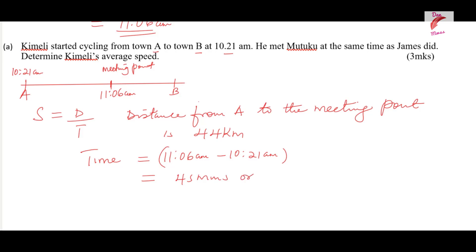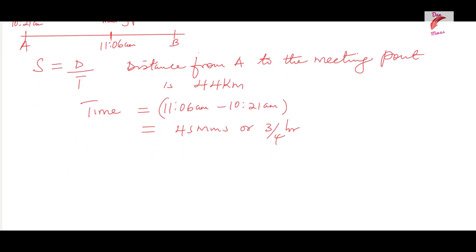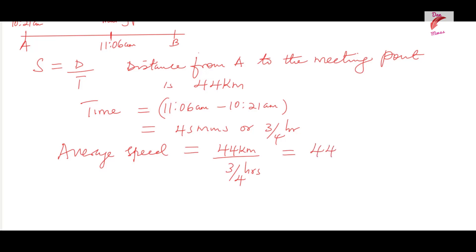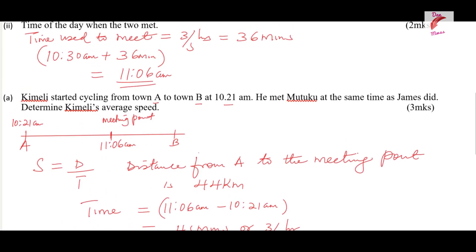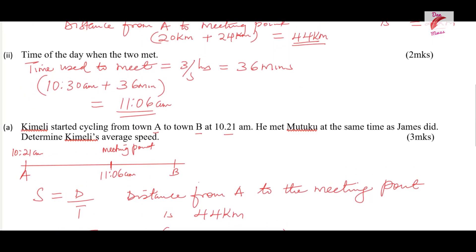45 minutes is equivalent to 3/4 of an hour. Now we have everything. The average speed equals distance divided by time: 44 kilometers divided by 3/4 hours, which equals 44 times 4/3. This gives 58 and 2/3 kilometers per hour. That is how you solve this question on linear motion.